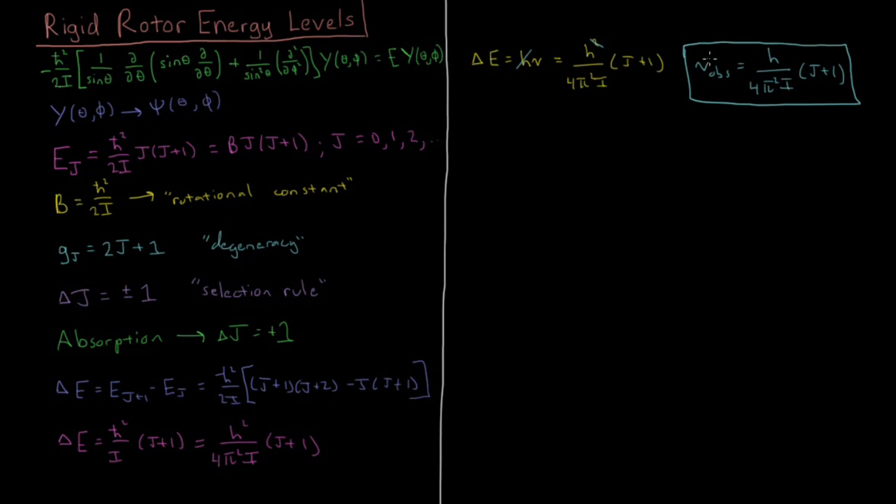Energies are going to be increasing as, the difference between the energy levels is going to be increasing as j increases, because you see that the energy goes up quadratically with increasing j, so the differences in energy level are going to be going up linearly with j.